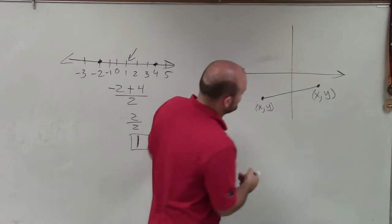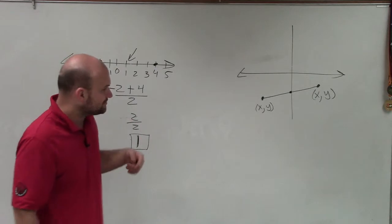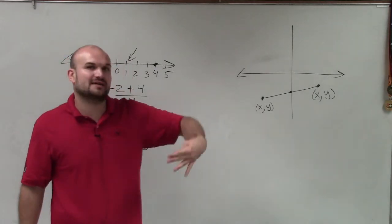So I'm going to draw a straight line between these two points. Now I can look at this and estimate that my midpoint's going to be somewhere roughly around in there, right? But how do I algebraically do this?